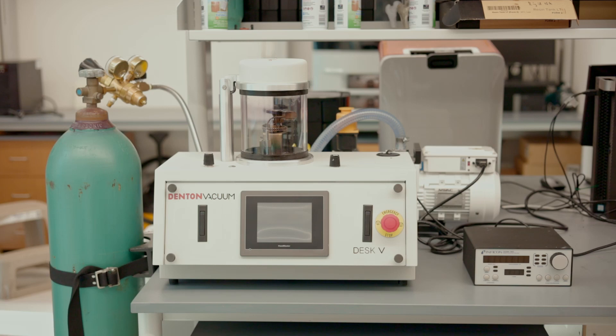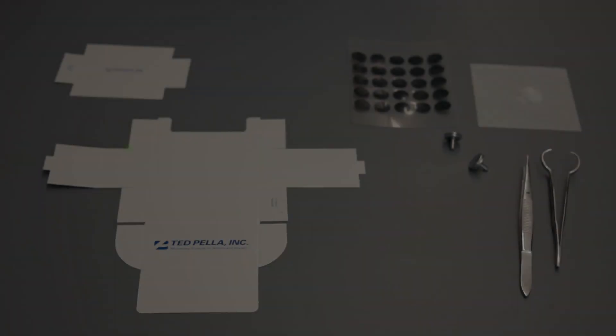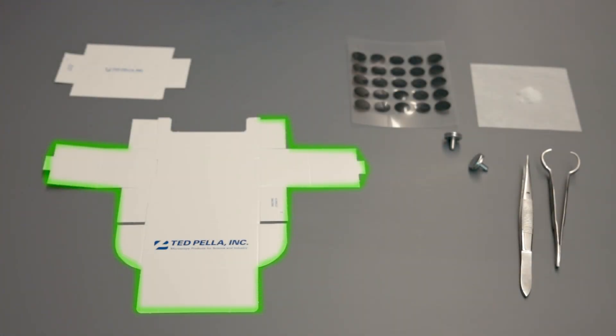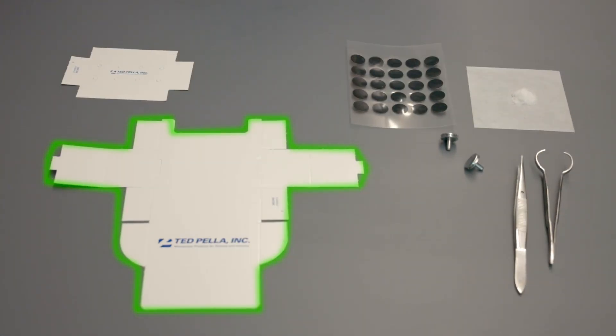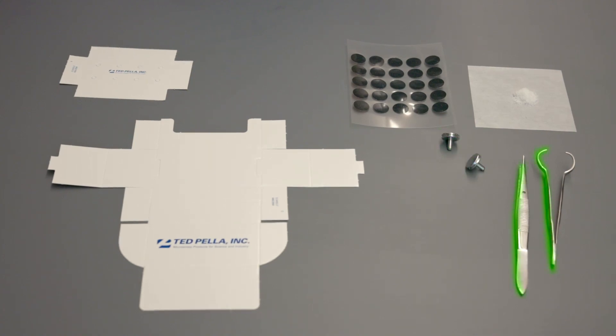The sputter coater is connected to an argon gas tank, a vacuum pump, and a thickness monitor. We need a box to help us with sample preparation and storage, the sample, carbon conductive tape, sample mounts, and a couple of tweezers.